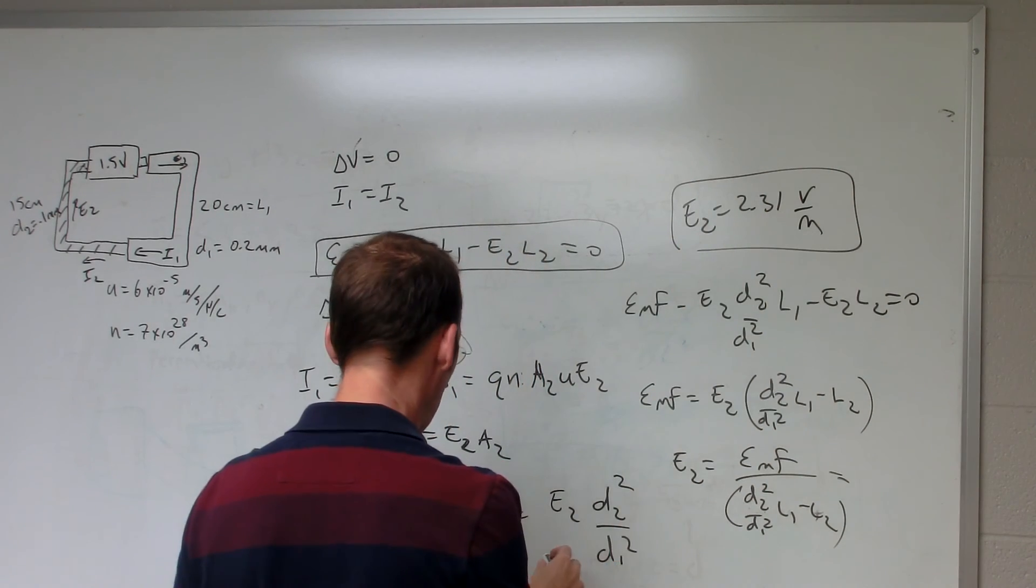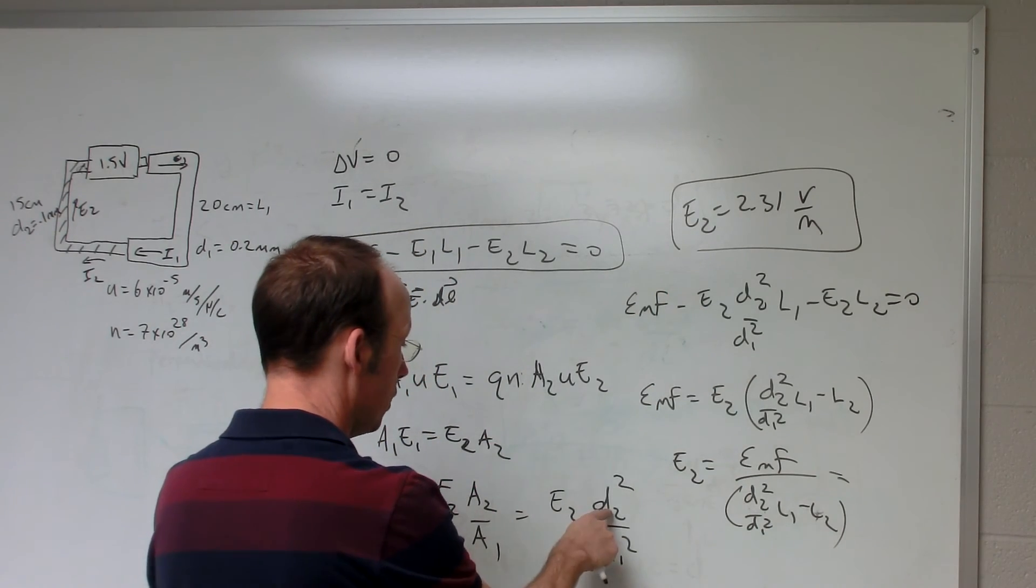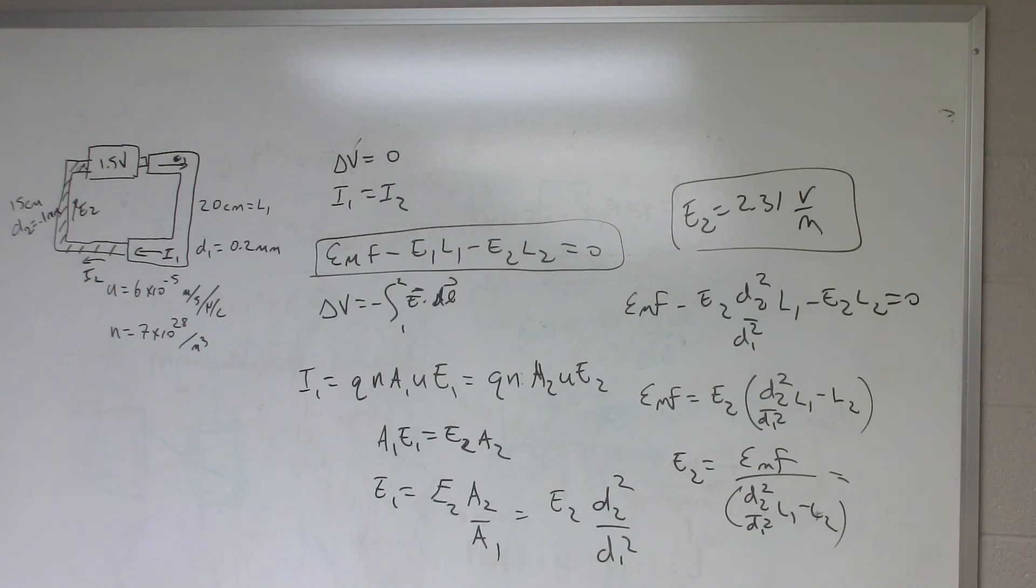Now I can get E1 down here. It's just going to be E2 times that ratio. So if I just say 2.31 times 0.2, let's see, times D2 squared, which is 0.1. So I get 0.1 squared divided by 0.2 squared, and I get 0.58.